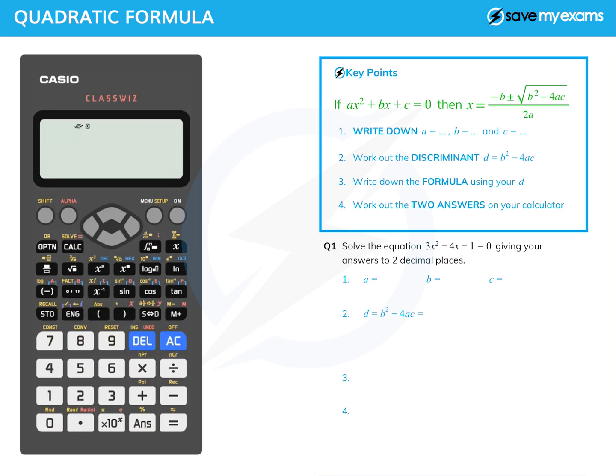And once we've done that we can reach for our calculator. You can see I've got mine ready on the left hand side there. So let's have a go at this question down here. Solve the equation 3x squared minus 4x minus 1 equals 0, giving our answers to two decimal places. So plenty of minus signs here to be aware of.